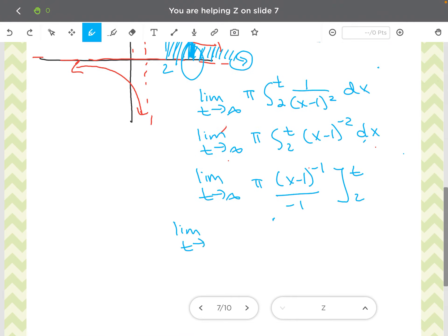Now, before I plug in my bounds, I'm going to rewrite this, clean this up a little bit. There's a negative sign. This 1 over x minus 1 goes to the bottom. And let's go ahead and plug in our bounds.